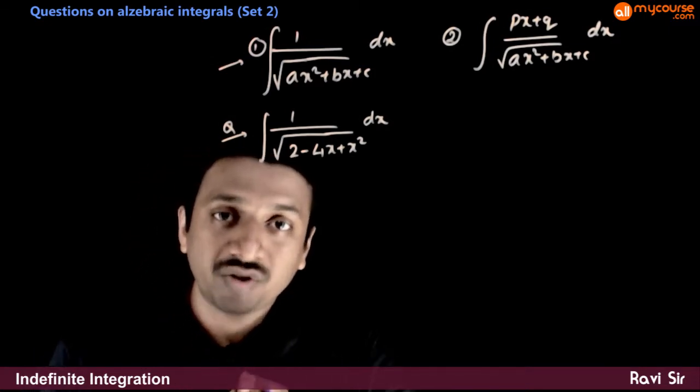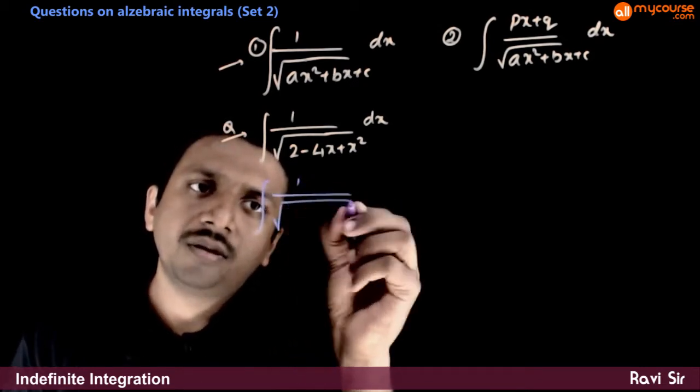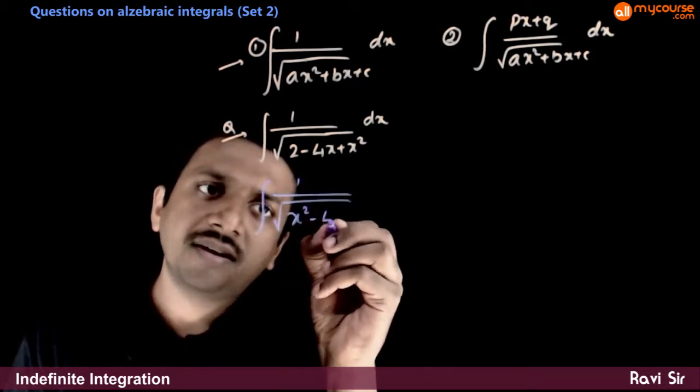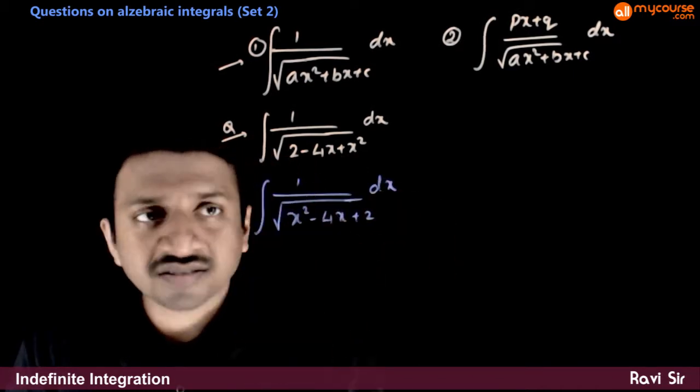We use the method of completion of squares. So, integration of 1 by root of x square minus 4x plus 2 dx. If I rearrange this,